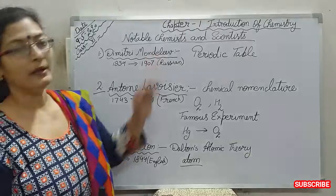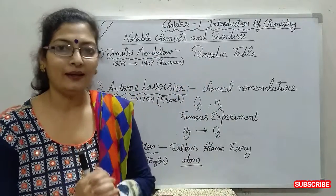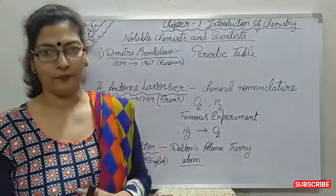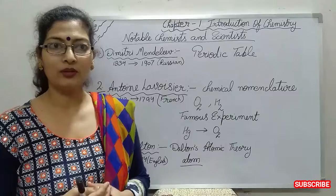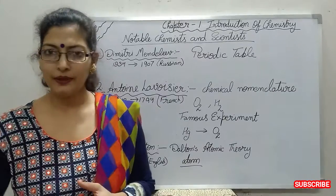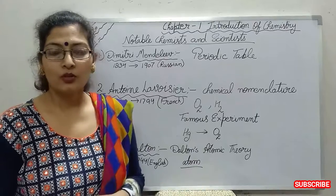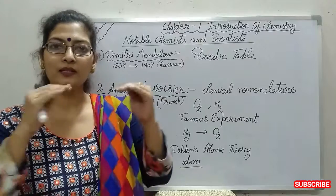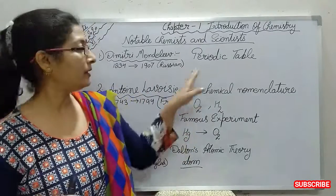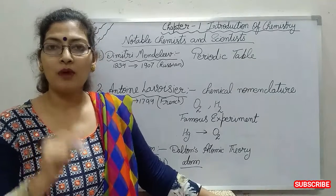So first is Dmitri Mendeleev. He arranged all the elements in a systematic way. It is not possible to study the elements separately - it is very difficult and confusing. So what he did was arrange all the elements in a systematic way according to their atomic mass.